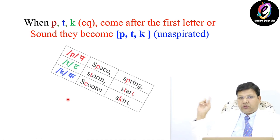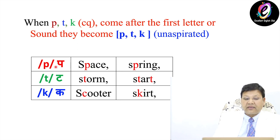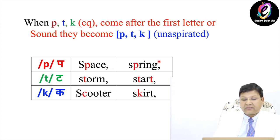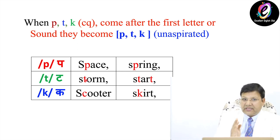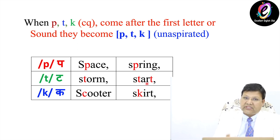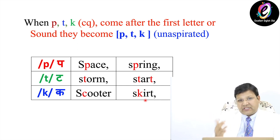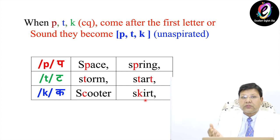Look at this table. First one is Pa as in space, spring. Second one is Ta as in storm, start — not storm with aspiration, but storm. The Ta sound comes after the first letter in both places, so we say Ta, Ta, not Tha, Tha — it will be start. The third example is Ka as in scooter or skirt. If Pa, Ta, Ka come after the first letter or sound, they will be pronounced Pa, Ta, Ka — which are called unaspirated sounds.